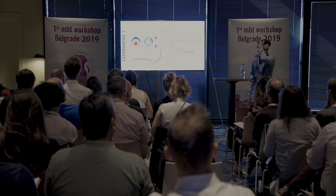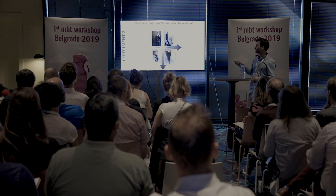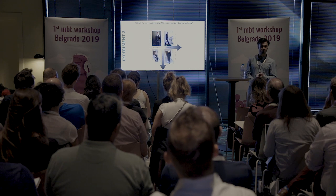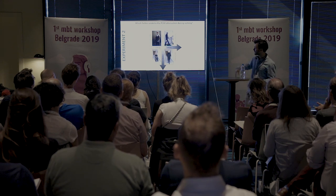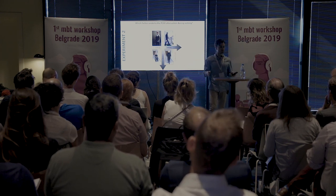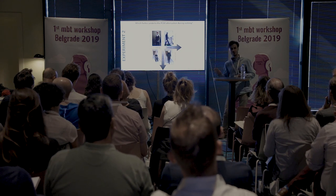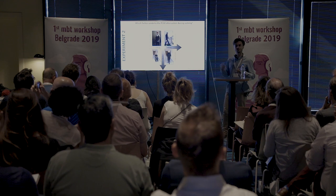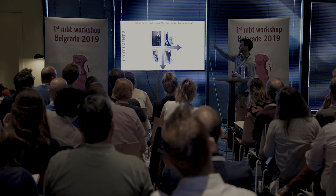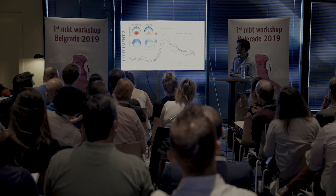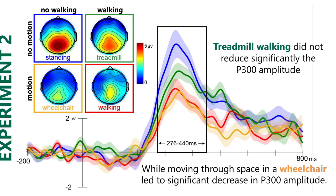We designed a follow-up experiment to break apart the potential factors: what are the differences between standing still and walking? First, the physical act of walking; second, moving through space. We had a treadmill condition — walking but not moving through space — and a wheelchair condition — moving through space but not walking — plus the original standing and walking conditions: a nice two-by-two factorial design. We replicated the findings again, another replication in the MOBI field.